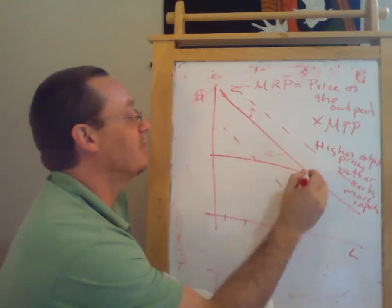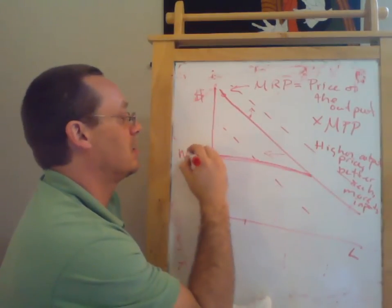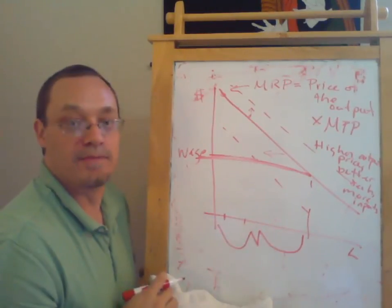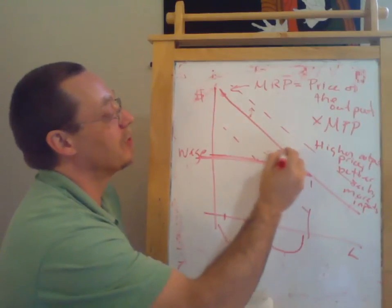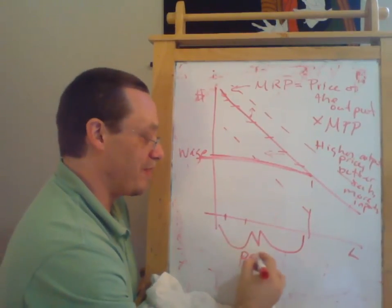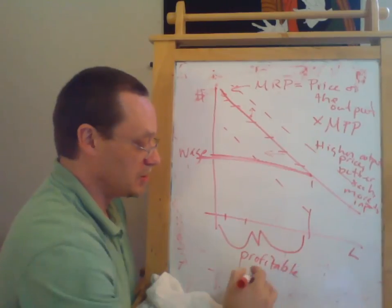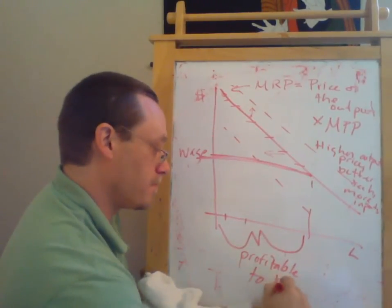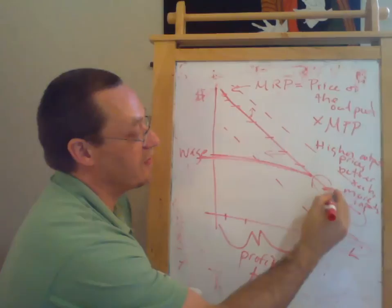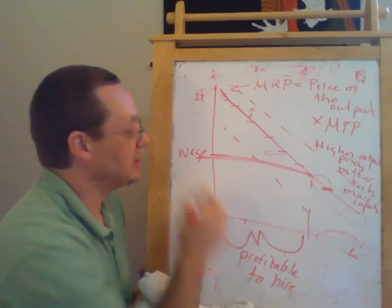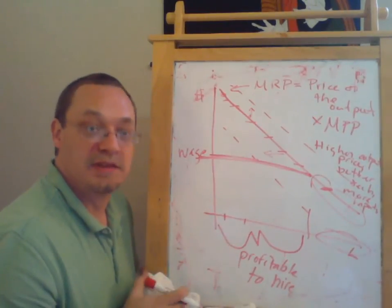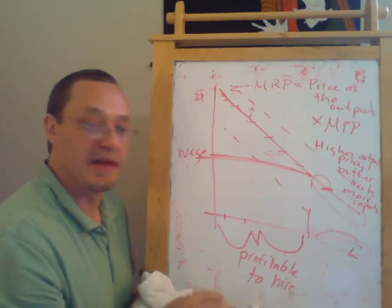The marginal revenue product is what determines how many workers a firm wants to hire. If the wage is at a certain level, the firm wants to hire all workers whose marginal revenue product exceeds that wage, because all those workers produce more than they cost. Workers whose marginal revenue product falls below their wage are not profitable to hire. So the marginal revenue product curve is, in fact, the labor demand curve.